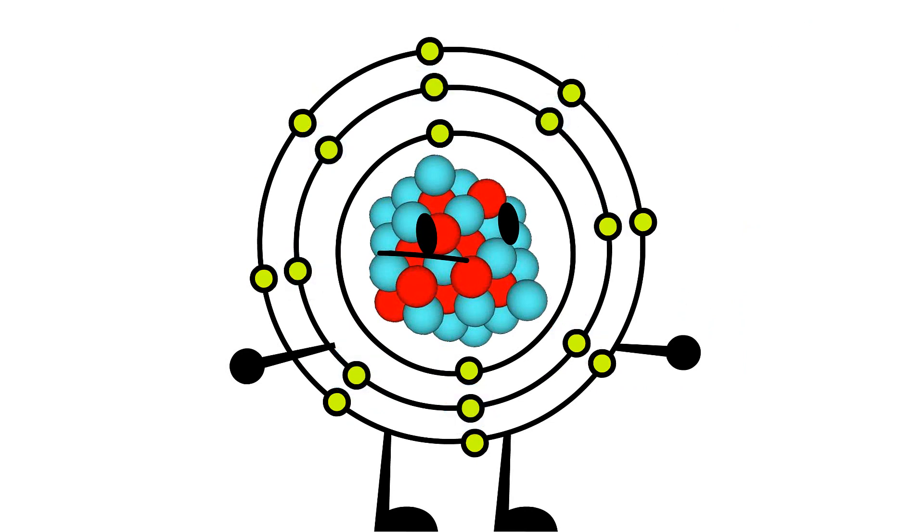So, if we do the math correctly, my first energy level can hold 2 electrons, my second energy level can hold 8 electrons, and my third can hold 8.